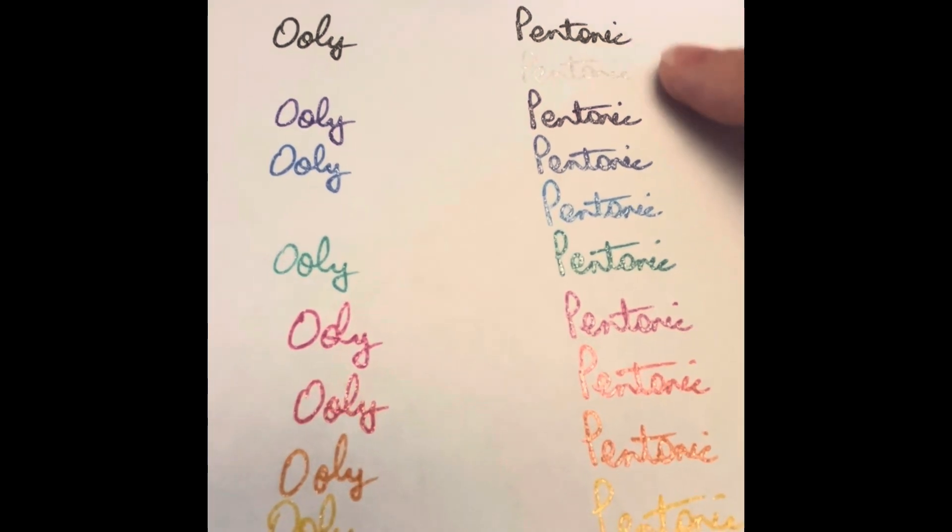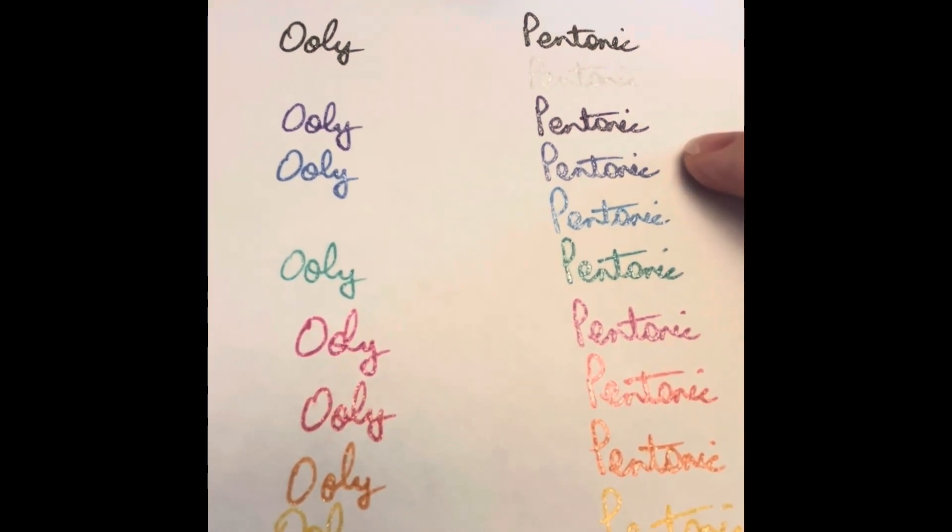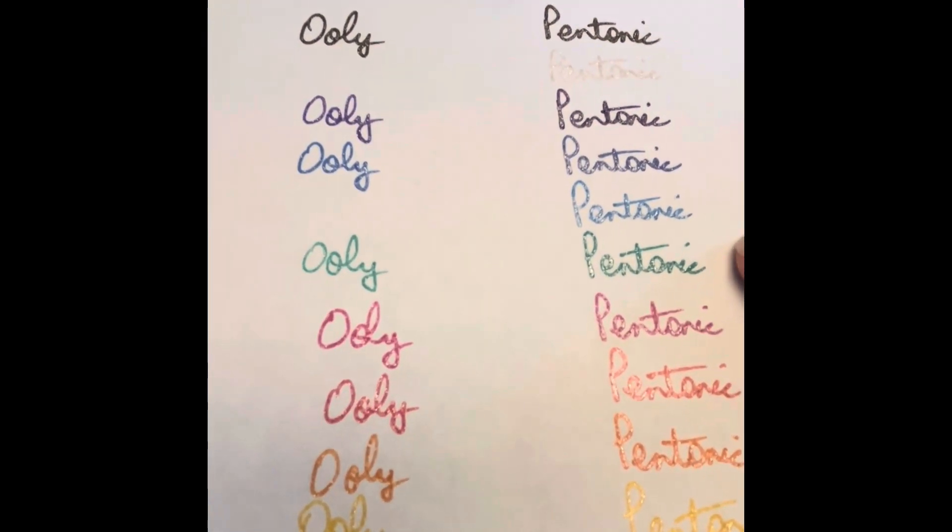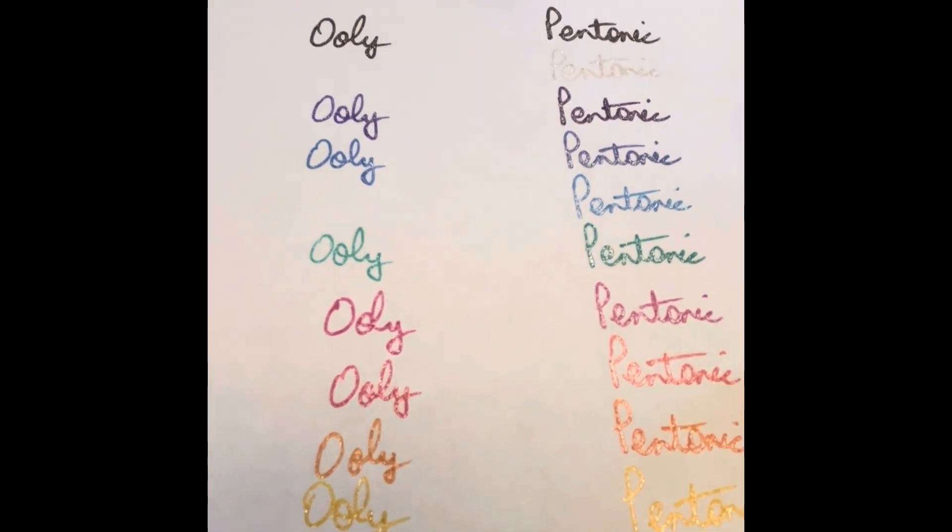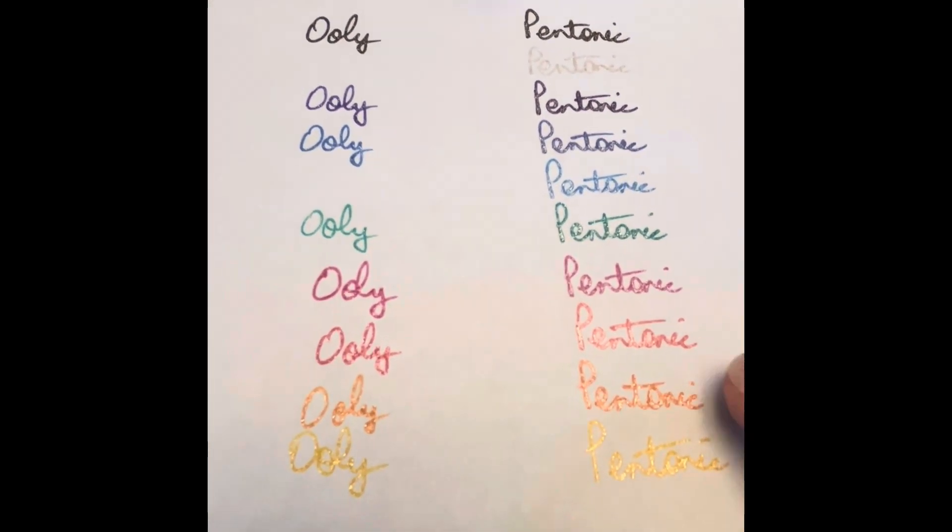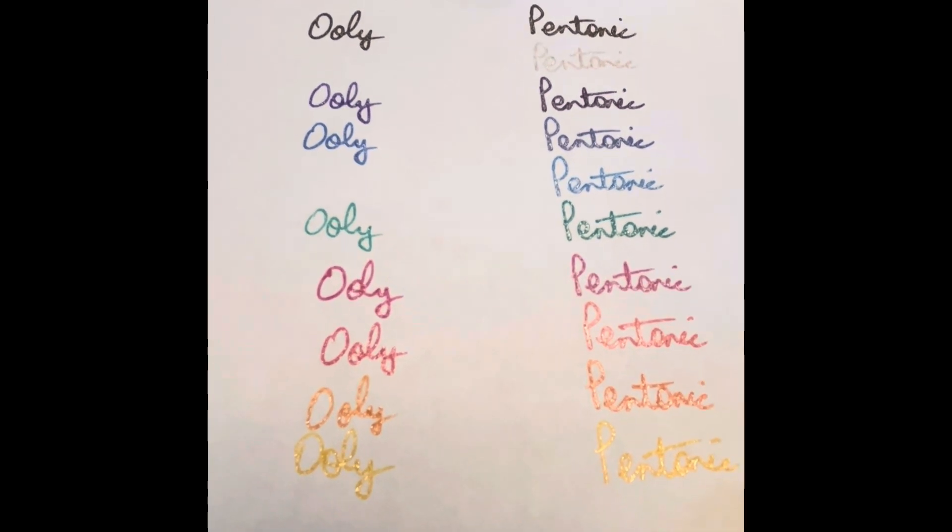So you can see the black, the purple, the regular blue, the green, the pink, red, and I called it orange or bronze, and then the gold.